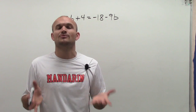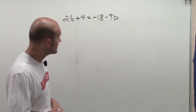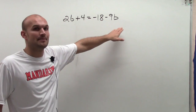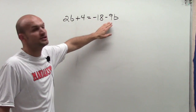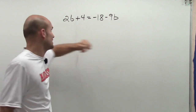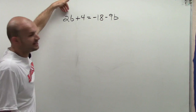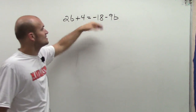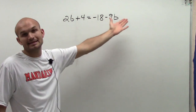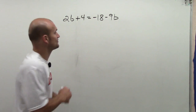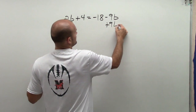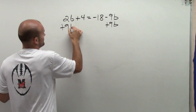I do not like dealing with negative numbers. So what I'm going to do is I have a negative 9b — I am going to get rid of the negative 9b on the right side rather than getting rid of the positive 2b, because 2b is a larger quantity than negative 9b. So to get rid of the negative 9, I'm going to add 9b on both sides.